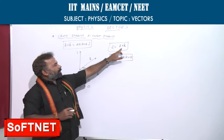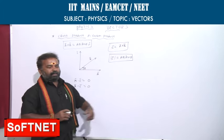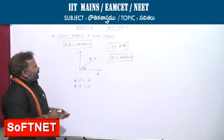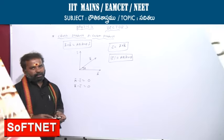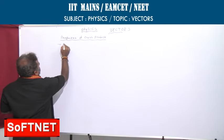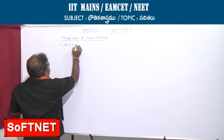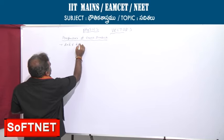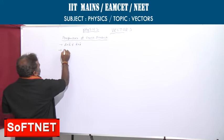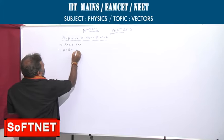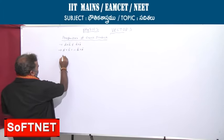Cross product of two vectors is a vector perpendicular to both the vectors. Now, next we will continue about the properties of cross product. Cross product does not obey the commutative law. A bar cross B bar is not equal to B bar cross A bar. A bar cross B bar is equal to minus B bar cross A bar.